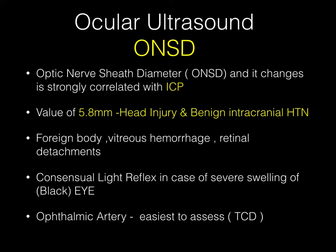Now why do we need to do this? In recent past, one very interesting observation has been noted from MRI finding of optic nerve sheath diameter — that MRI finding of optic nerve sheath diameter correlates very well with the intracranial pressure. Now if the optic nerve sheath is big, there is a chance that there is intracranial hypertension due to trauma, benign intracranial hypertension, or any chronic cause.